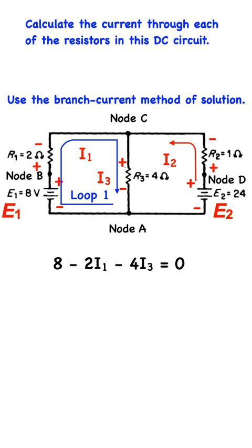For loop ADCA plus 24 for E2 and the resistors drop the voltage by minus 10I2 for resistor R2 and minus 4I3 for resistor R3. These voltage changes, when added together, must equal zero. We write that in the form of an equation, plus 24 minus 10I2 minus 4I3 equals zero.